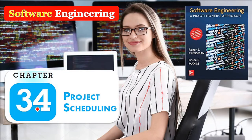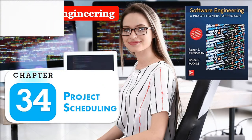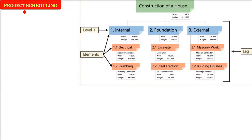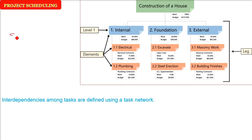In software engineering we are taking chapter 34: project scheduling. In project scheduling there are different tasks. You might recall that we first make the scope, then we take out the functions, and then we decide the tasks that will be accomplished to fulfill the function. There will be tasks which will be interdependent, and these are defined using a task network.